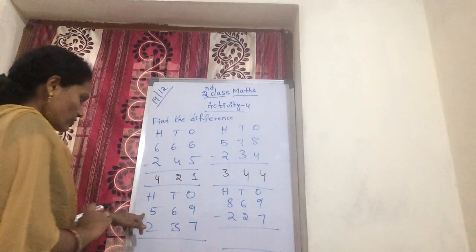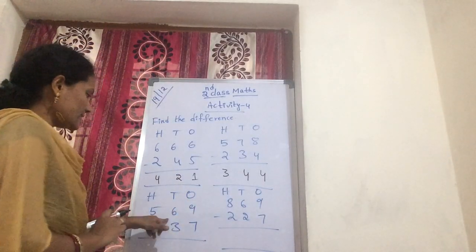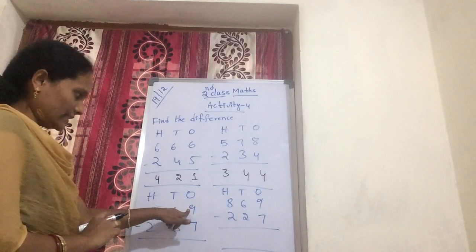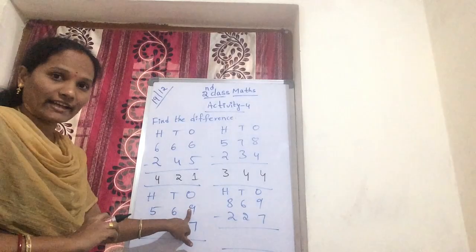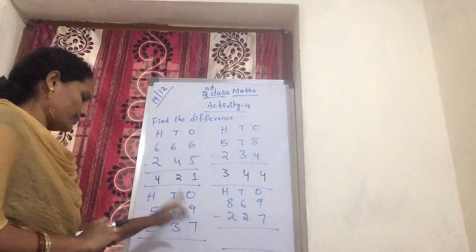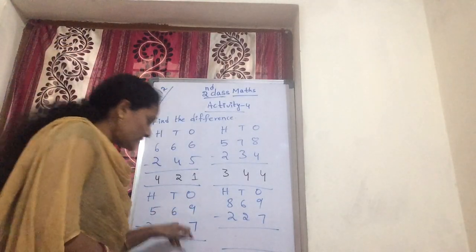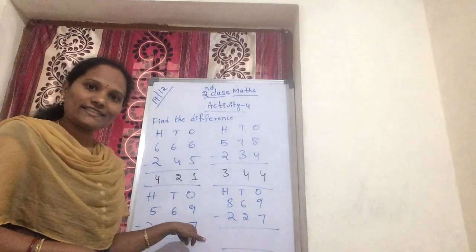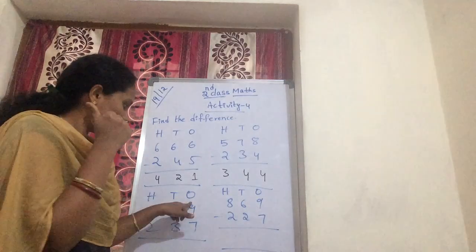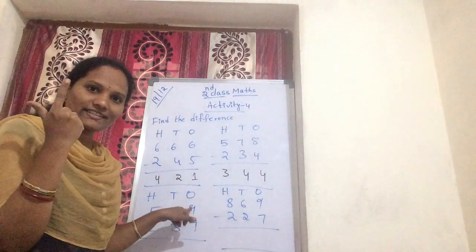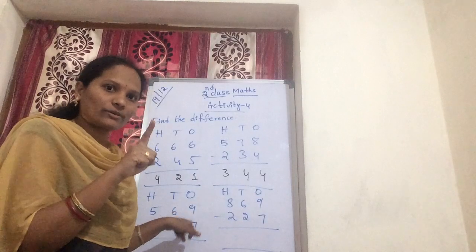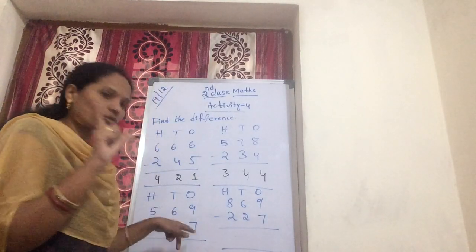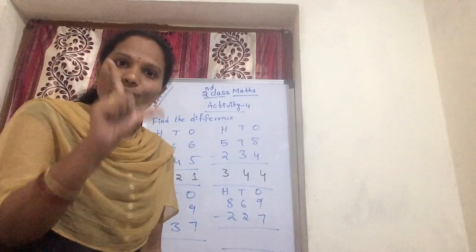Now coming to ones. First read the problem: 569 minus 237. Here 9 is the first number. Now second number is 7. You are counting from the second number to the first number. From 7 up to 9 — you are reaching 9. In this way you are getting how many fingers? 2 fingers.